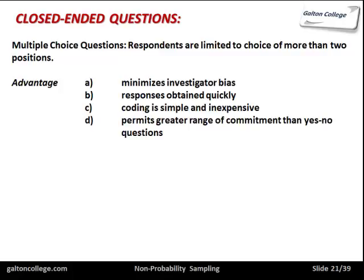The advantages of multiple choice: it does minimize investigator bias because the answers are given, so there's very little the interviewer can do. Though the interviewer could influence responses toward a particular answer by placing greater emphasis on one — which could happen without the interviewer knowing. Responses are obtained quickly, coding is simple and inexpensive, it's easy to get an overall picture, and it permits a greater range of responses than simple yes or no questions.